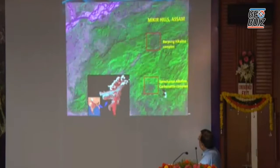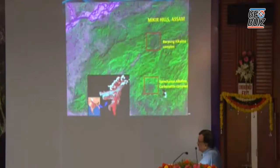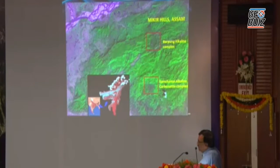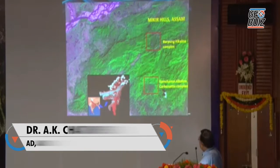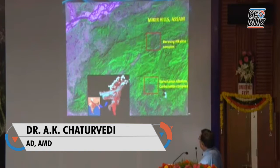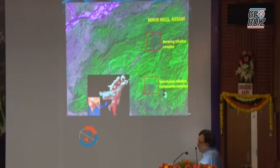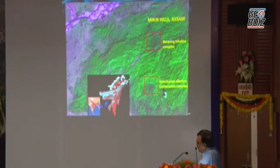Similarly, in Assam we have very important resources for rare earth. We can see the Sung-Champi alkaline carbonatite complex and the Barpung alkaline complex, which were basically identified on the satellite data.